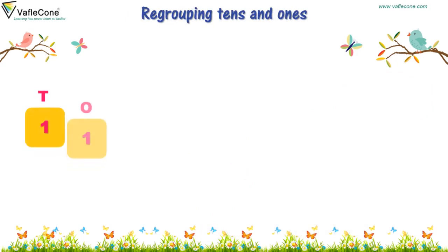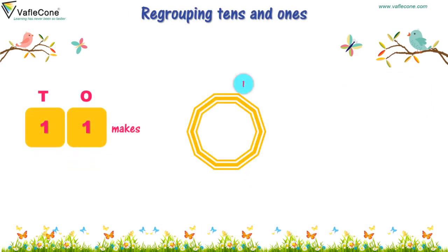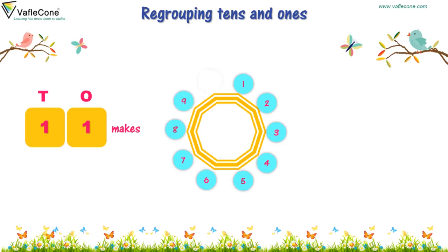One, one — eleven makes one ten and one, two, three, four, five, six, seven, eight, nine, ten. One ten and one. One, one.